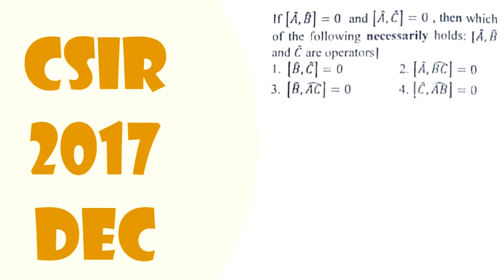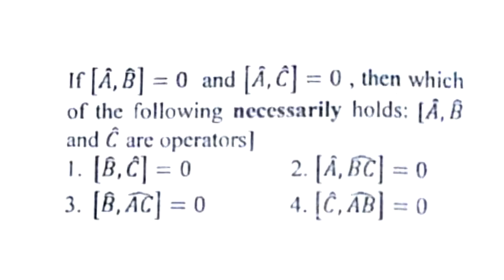Let us see a question based on quantum mechanics which mainly focuses on commutator properties. The question was asked in 2017 December, Part B. It is given that the commutator of A and B is equal to zero and the commutator of A and C is equal to zero. Then which of the following necessarily holds? It is given that A, B, and C are operators.